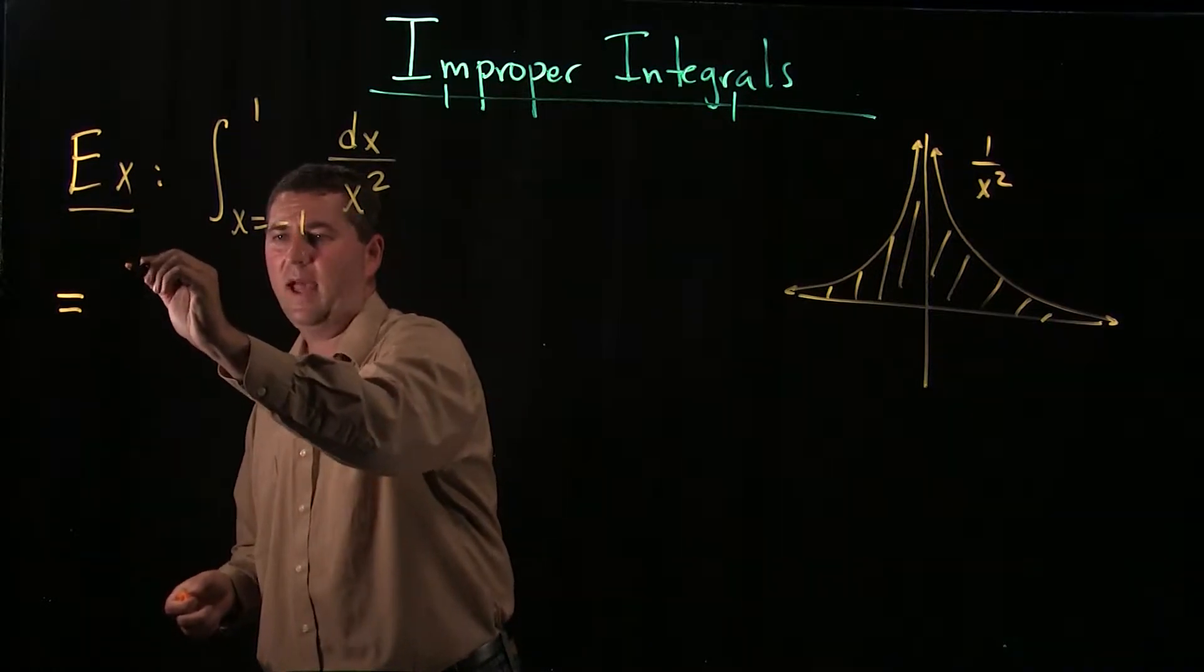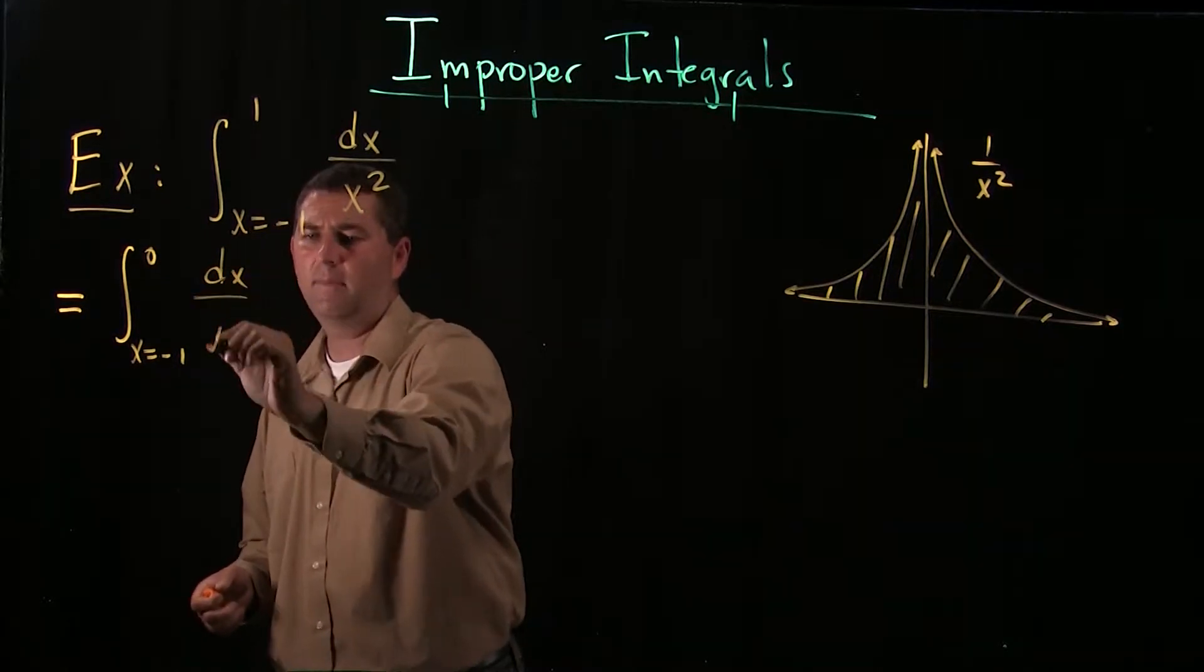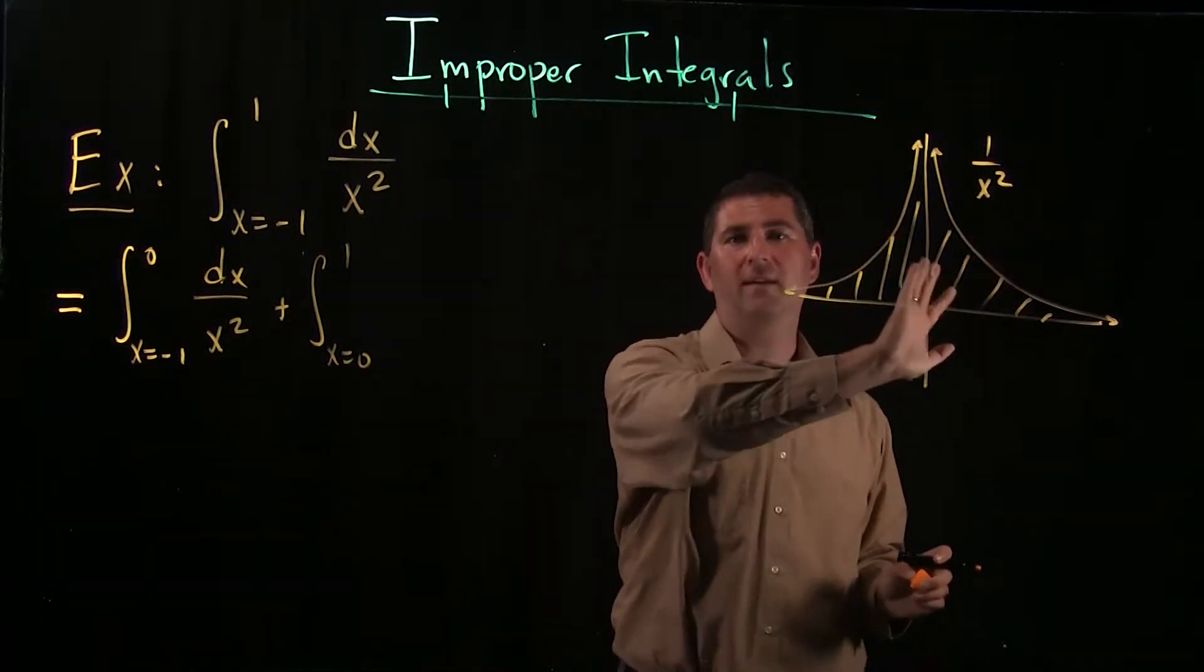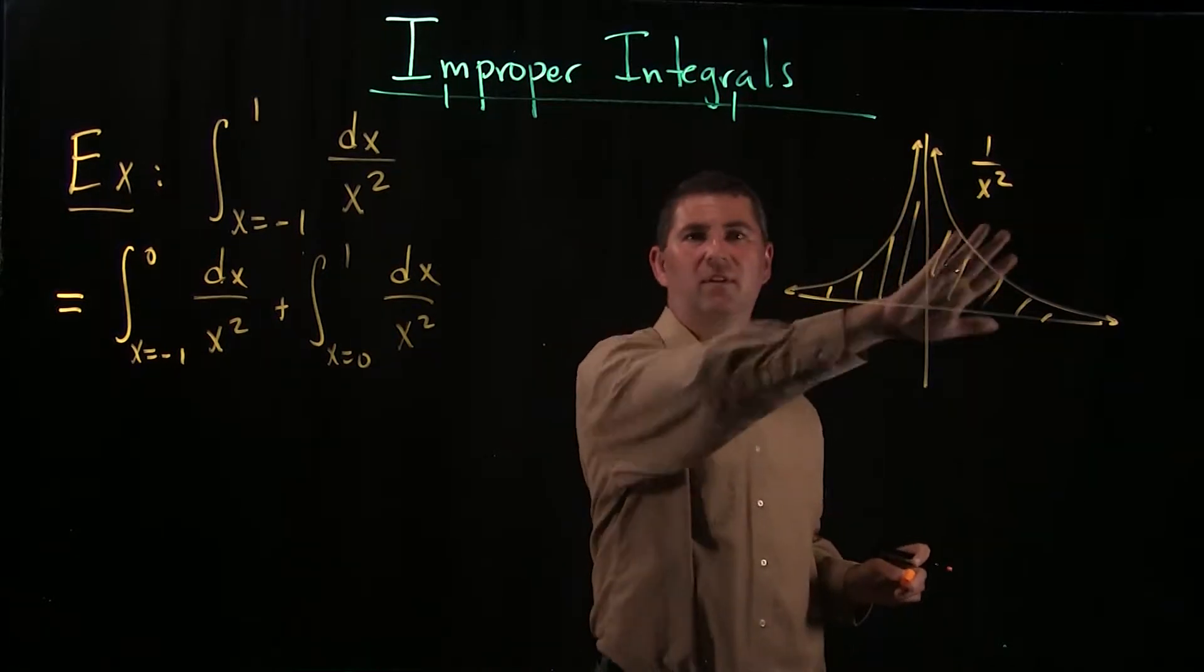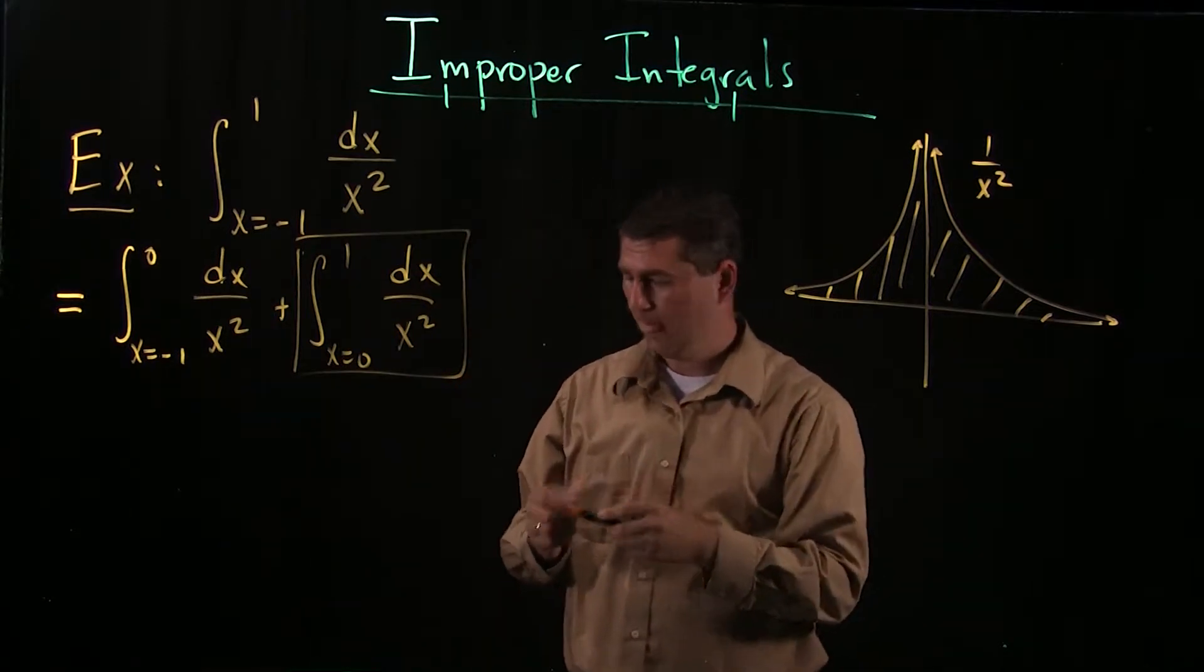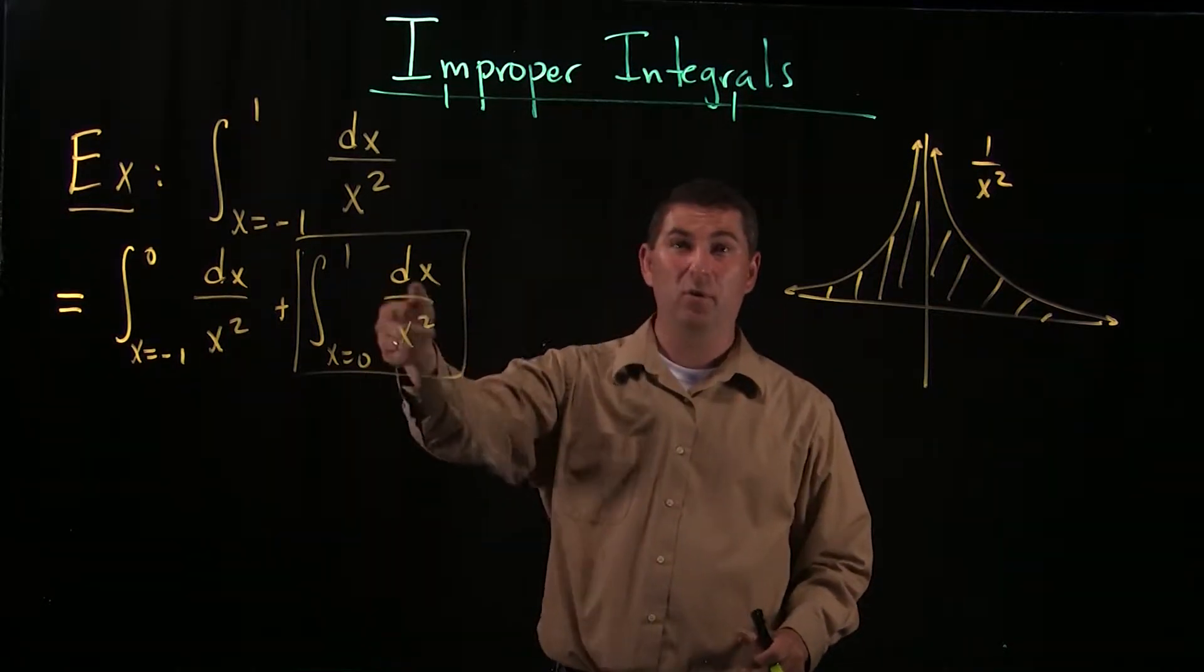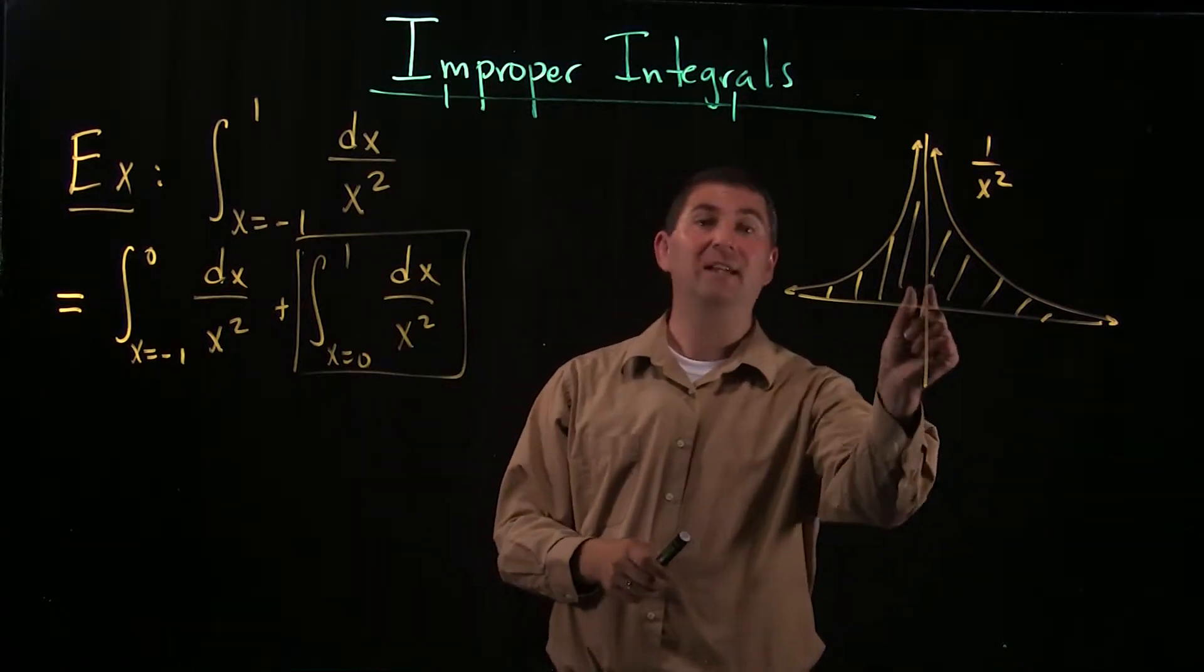So instead of computing it in this sort of naive way, we're going to break this up into two pieces. I break it up first as the integral from negative 1 to 0. Why did I pick 0? Because that's where the discontinuity is. And then I'll integrate from 0 to 1. If you're paying attention, you'll say those should give you the same answer, this function is symmetric.